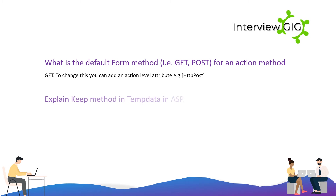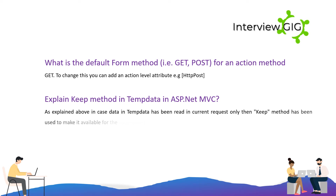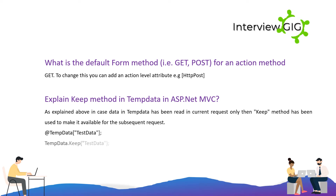Explain the Keep method in TempData in ASP.NET MVC. If data in TempData has been read in the current request, the Keep method is used to make it available for the subsequent request. Example: TempData["testdata"]; TempData.Keep("testdata");